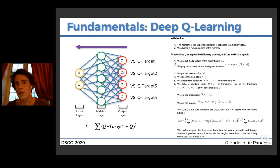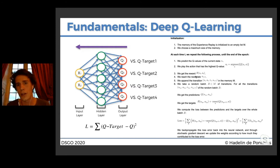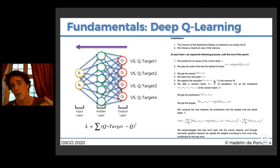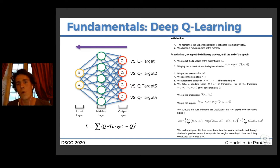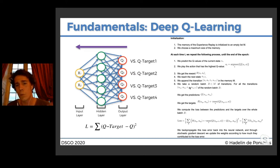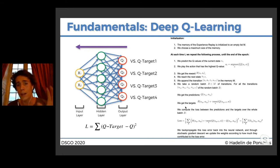All this gives you a transition composed of the current state St, the action played At, the reward received Rt, and the next state reached St+1. You append that transition to the memory. Once you start getting enough transitions, you take a random batch — a subset of these transitions. For all transitions within the batch, you get the predictions, which are the Q-values predicted by the neural network. Then you get the target. This formula comes from the famous Bellman equation, at the heart of reinforcement learning and Q-learning — that's how we compute the target Q-values.